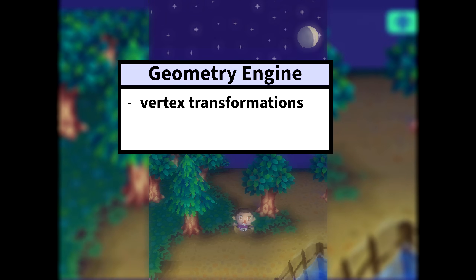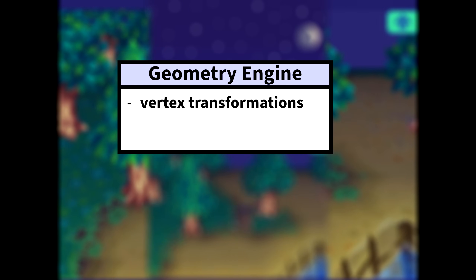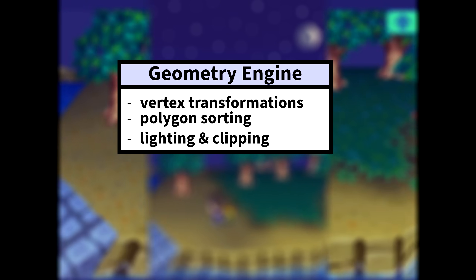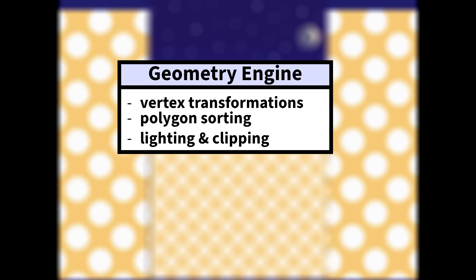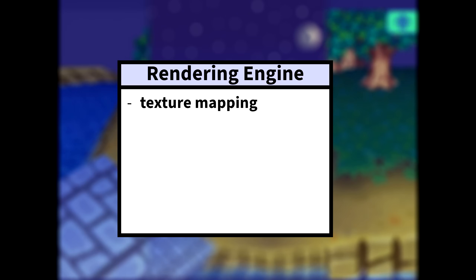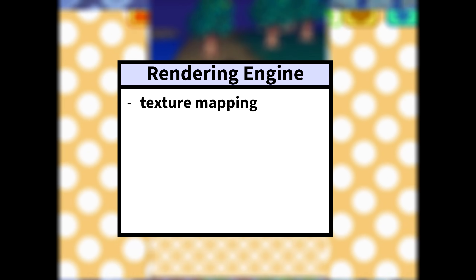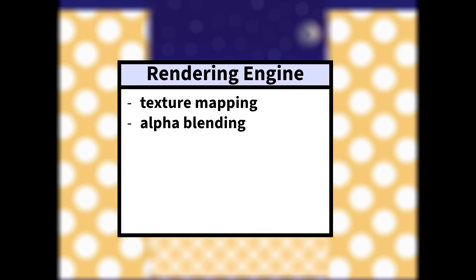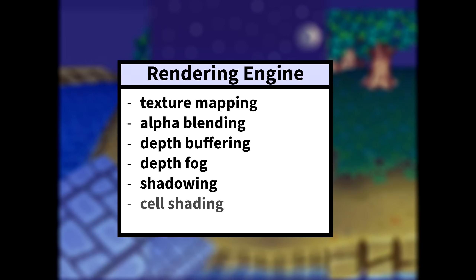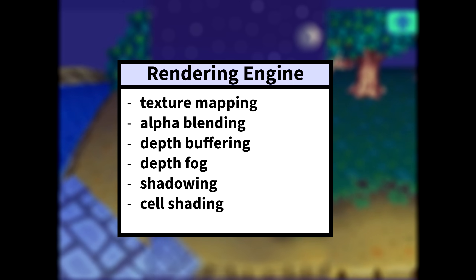The geometry engine is able to perform vertex transformations, polygon sorting, lighting, and clipping. The rendering engine is able to perform texture mapping with active perspective correction, alpha blending, depth buffering, depth fog, shadowing, cell or toon shading, and even anti-aliasing as well.